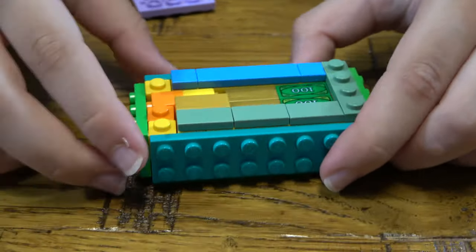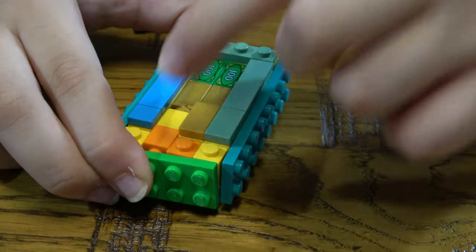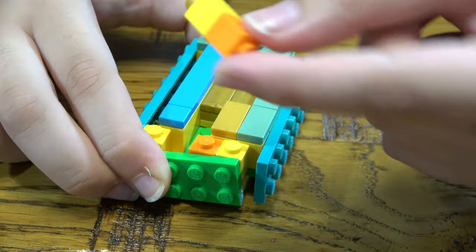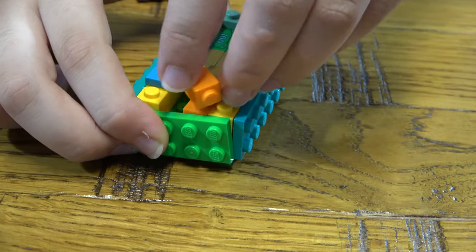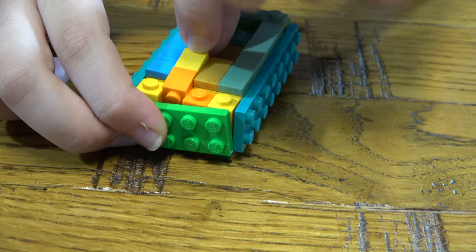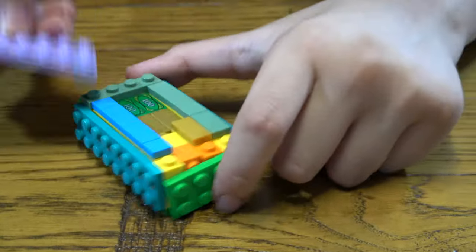So as you can see here, here is the mechanism. As you can see, if we try and pull this, this won't let it. This. Look. If we take it out, it comes out. But if we place it back, it won't. See.